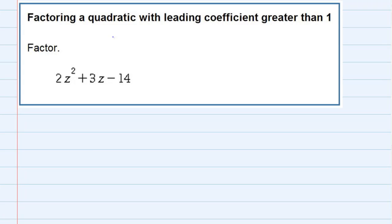Factoring a quadratic with leading coefficient greater than 1. For this example, we're going to use the AC method, and you'll see where that name comes from shortly.